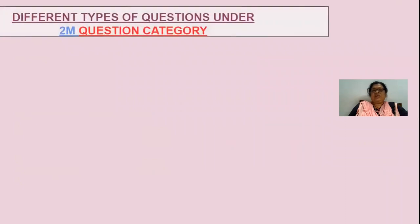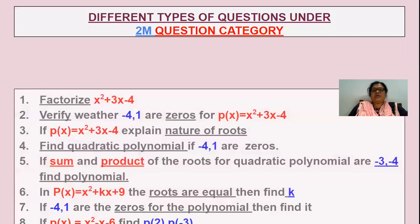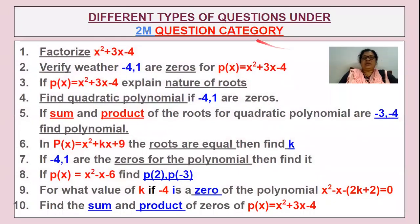If we take different types of questions under the 2-marks question category, under quadratic equations and polynomial, when you take a quadratic polynomial, I have taken x squared plus 3x minus 4. The same quadratic polynomial may be asked in different types of questions. I have displayed 10 different types of questions under the 2-marks category. See how they may be asked.